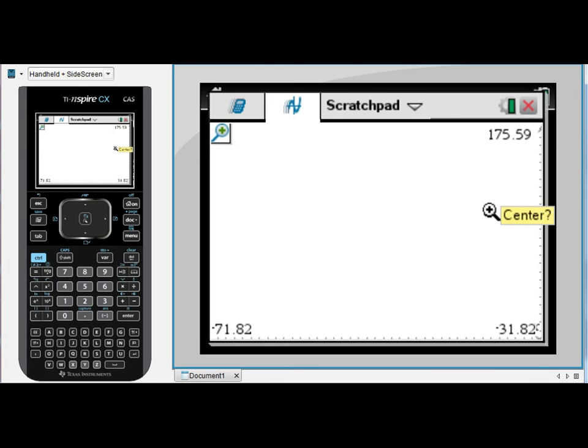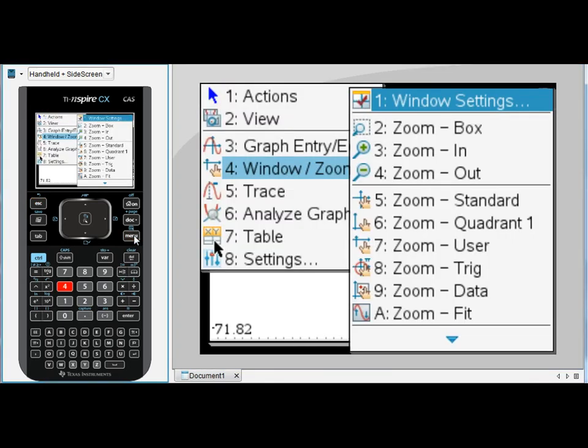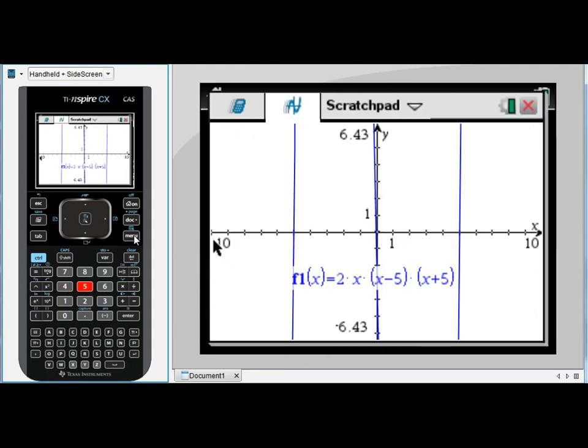So I think zooming is a really easy way to get yourself lost and you're much, much better to control your window by either using menu 4, 1 or adjusting the numbers actually on the screen by clicking on them. So I'm going to go back to zoom standard, so menu 4, 5 and go from there again. So just be careful about zoom. Generally adjusting the numbers on the screen I think is the best way to go about it.